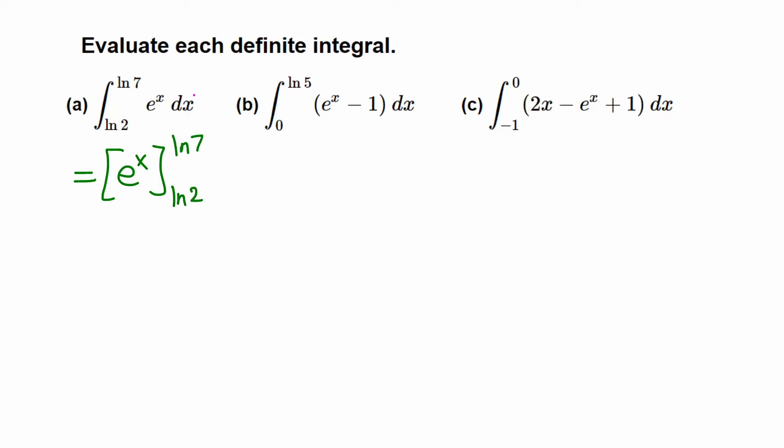In fact, we don't write it, but this one is for x - these are x values. Our independent variable is x in this question. Now replace x by the upper limit, so e raised to ln7, minus replace x by the lower limit, e raised to ln2.